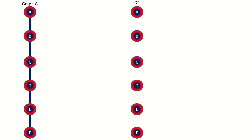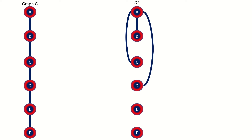Vertex A in the graph power will connect to any other vertex in the graph power, so long as their distance in the original graph was at most three. The distance between vertices A and B was 1, which is less than or equal to 3, so they connect in the third power graph. The distance between A and C was 2, also less than or equal to 3, so they connect. The distance between A and D was 3, so they too connect. However, the distances between A and E and A and F are greater than 3, so they do not connect in the graph power.